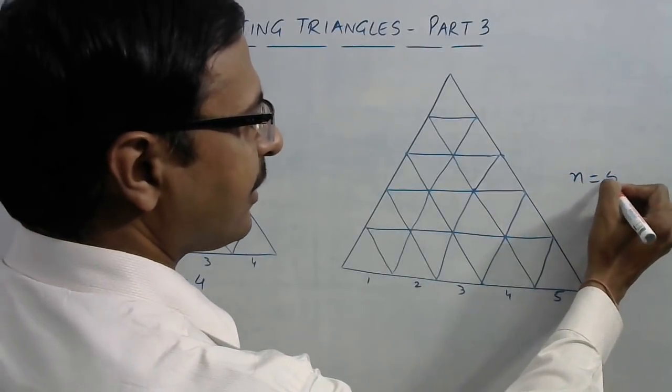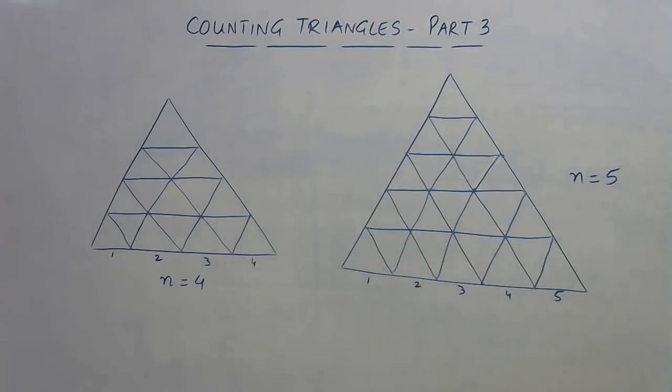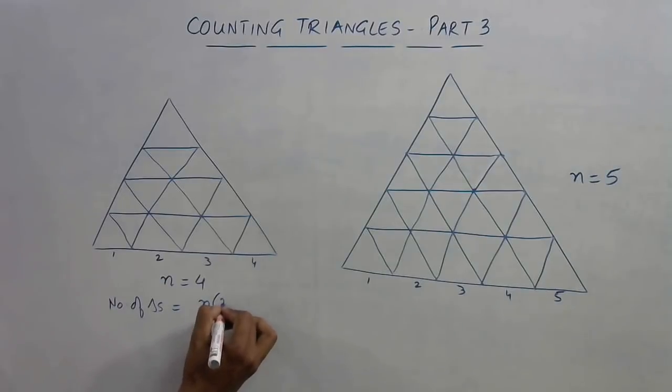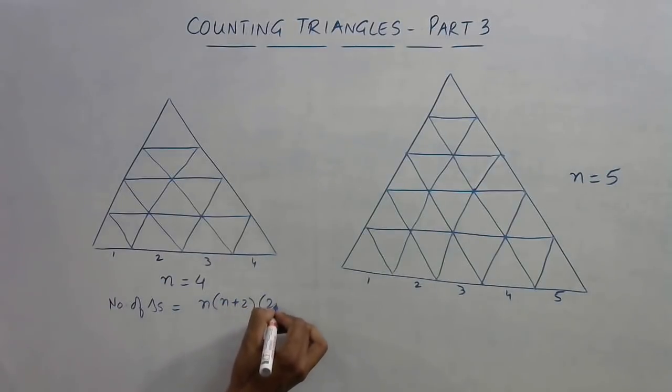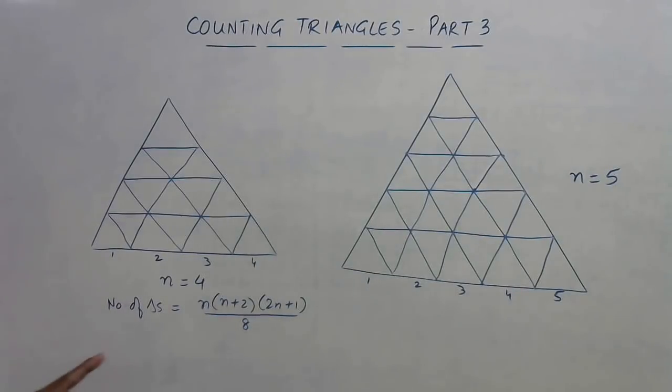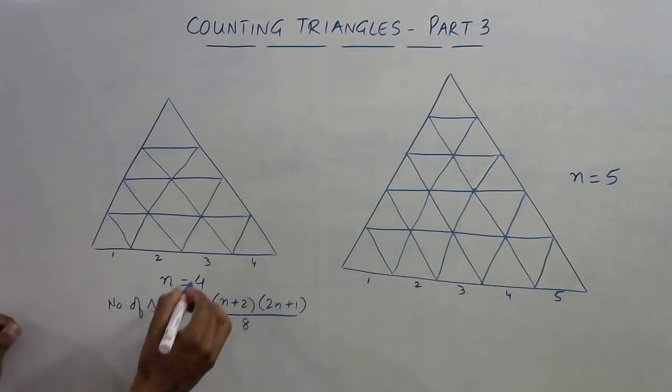Whenever you have even number of triangles in the base, that is n is four in this case, n is five - the formula changes when there are odd number of triangles. I will tell this first, which I have already told in part two. In this case, number of triangles will always be equal to n(n+2)(2n+1)/8.